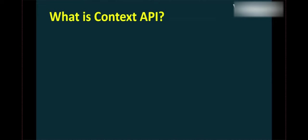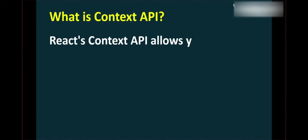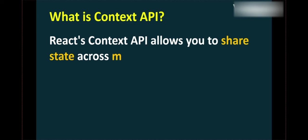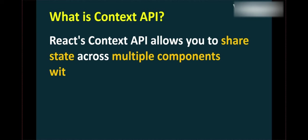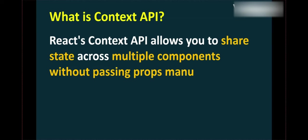What is Context API? React's Context API allows you to share state across multiple components without passing props manually at every level. This makes it easier to manage state in a cleaner and more efficient way.